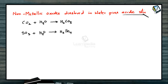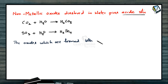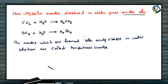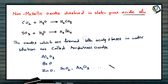Some acids are formed from nonmetallic oxides and some bases from metallic oxides. But some oxides have both acidic and basic properties — these come under amphoteric oxides. The oxides which form both acids and bases in water solution are called amphoteric oxides. Examples include aluminum oxide, beryllium oxide, zinc oxide, stannic oxide, and arsenic oxide. When dissolved in water, they exhibit both acidic and basic character.